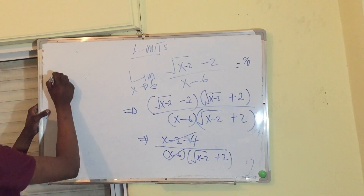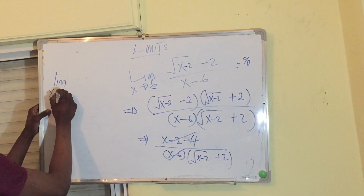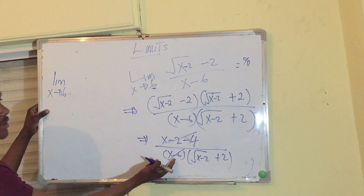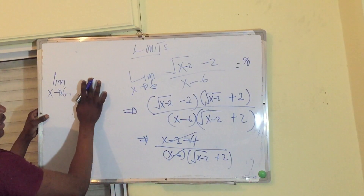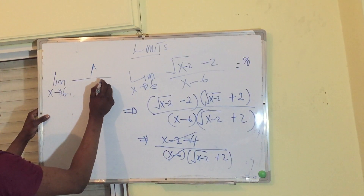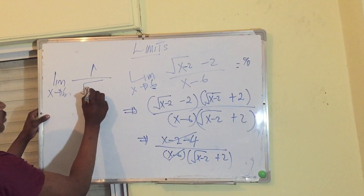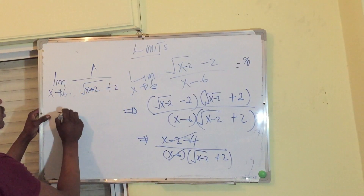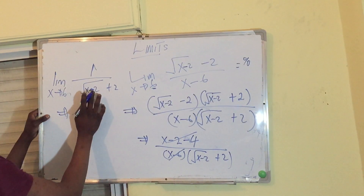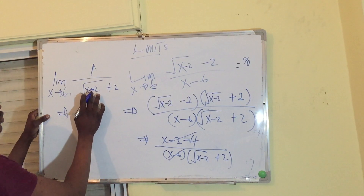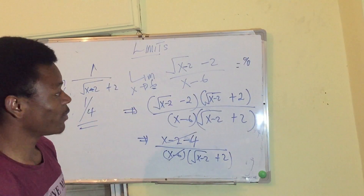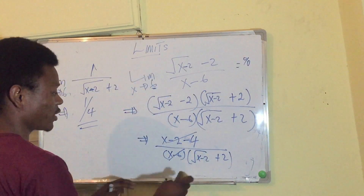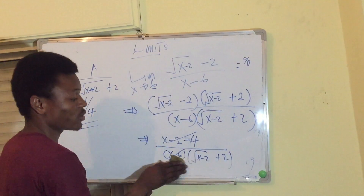After cancellation we have 1/(√(x−2) + 2). Now we can substitute x = 6: √(6−2) + 2 = √4 + 2 = 2 + 2 = 4. So the limit is 1/4. This is the limit found using rationalization — the difference of two squares conjugation method.